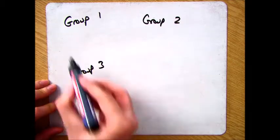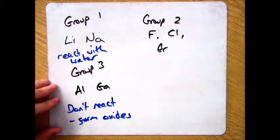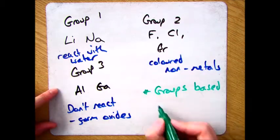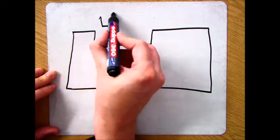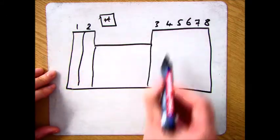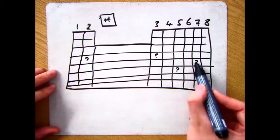He ended up taking all the elements with similar properties and putting them into groups. They may be slightly different to the ones you see today, but the idea remains they are groups based on their properties. And when he put them all together into what is now known as the periodic table, if a property didn't match up, he'd leave gaps, which we'll come onto in another video.